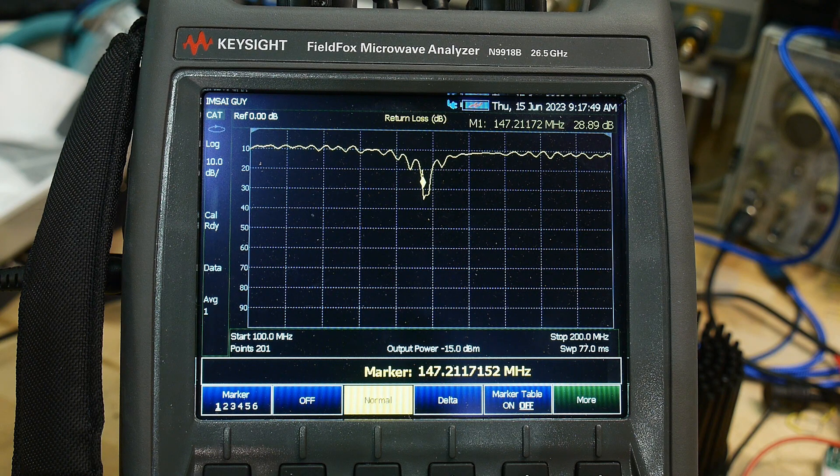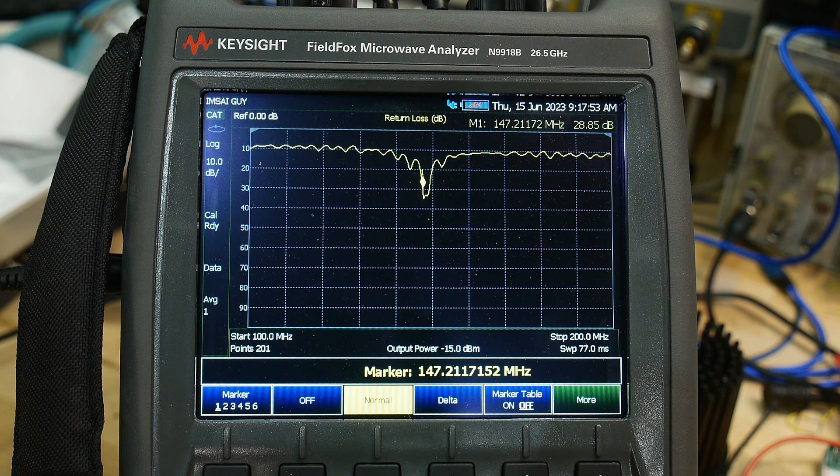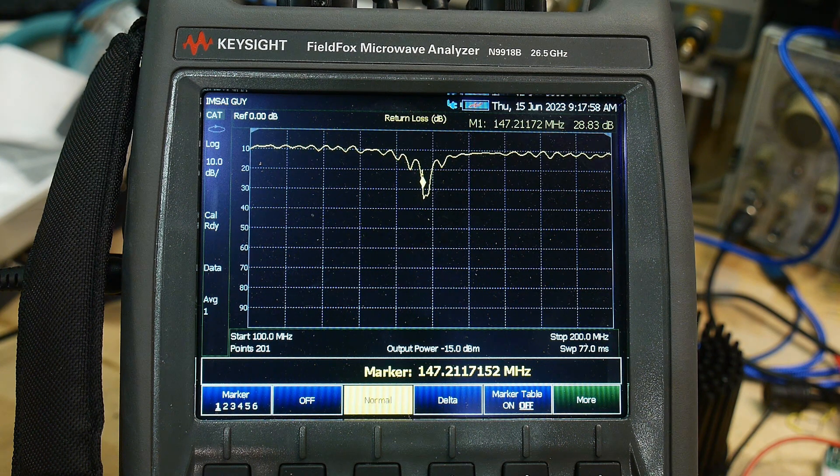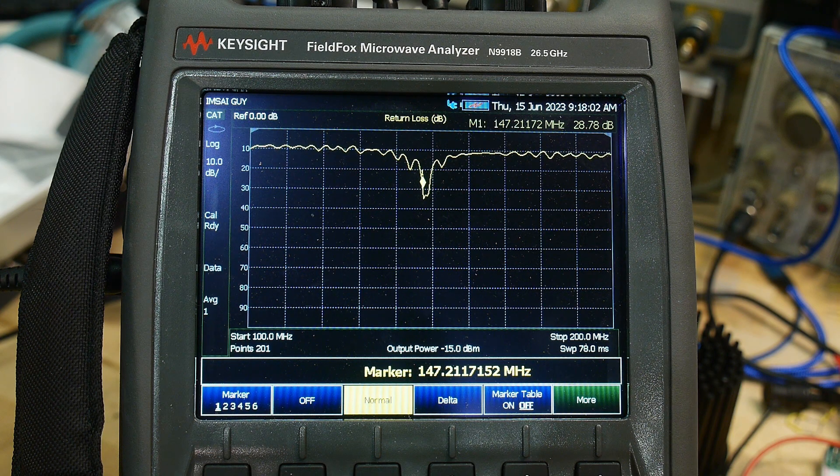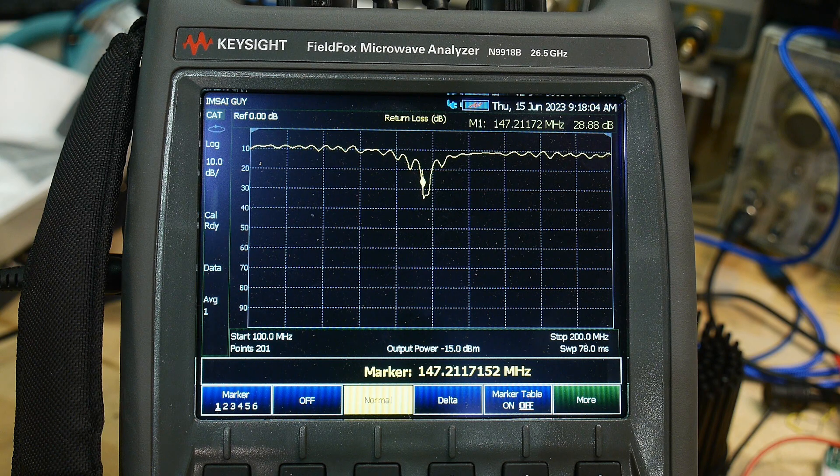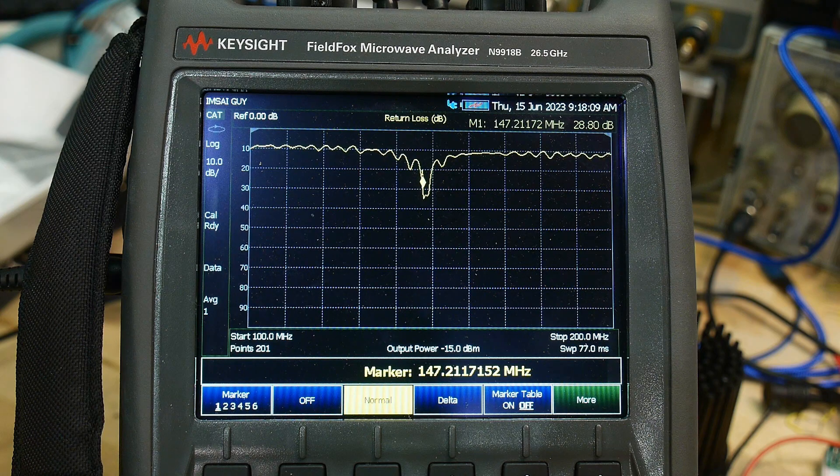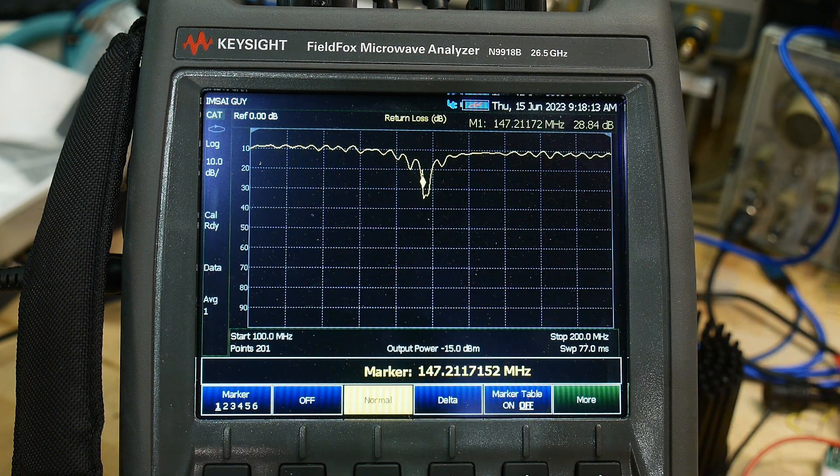So today what we're going to do is a different thing. We're going to combine two things together. One is what's called a TDR measurement, time domain reflectometry, and this measurement, the S11. We're going to combine the two. But let's first take a look at the time domain. This is the frequency domain. This is our return loss.